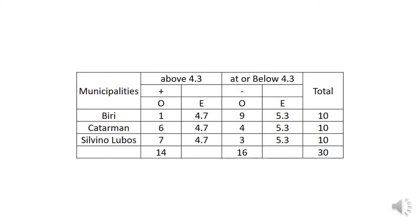The data is arranged in a 2×3 table. The municipalities are Biri, Katarman, and Silvino Lobos. For values above the median (4.3), the observed counts are: Biri = 1, Katarman = 6, and Silvino Lobos = 7, giving a row total of 14. For values at or below the median (4.3), the observed counts are: Biri = 9, Katarman = 4, and Silvino Lobos = 3, giving a row total of 16.